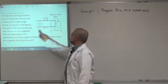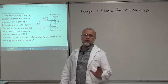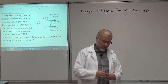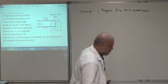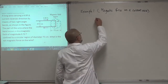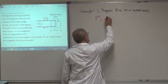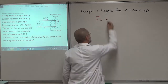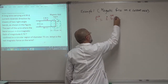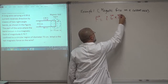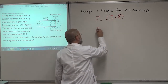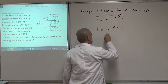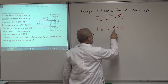We're looking for the magnetic force on the current wire. If there was no current in the wire, there would be no force. It's only when you put a current in the wire that you get the force. That force for a current wire is F = I L cross B. In magnitude, it will be I L B sine of the angle between the direction of I and B.